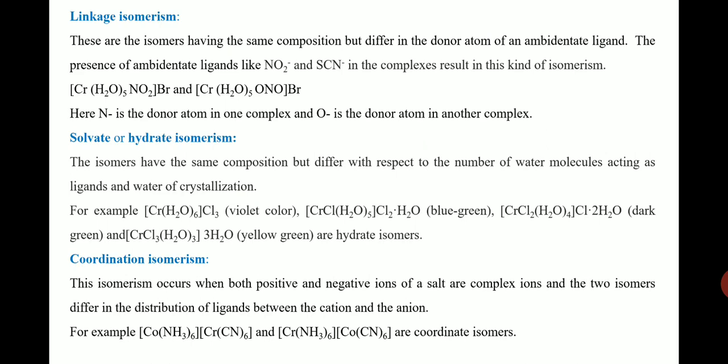Now consider solvate or hydrate isomerism. These isomers have the same composition but differ with respect to the number of water molecules attached to the central metal atom and also the water of crystallization. For example, in the first complex six molecules of water are coordinated to the metal atom, shown in violet color. In the second complex only five molecules of water are coordinated to the central metal atom. The color change is due to the difference in the number of coordinated water molecules.